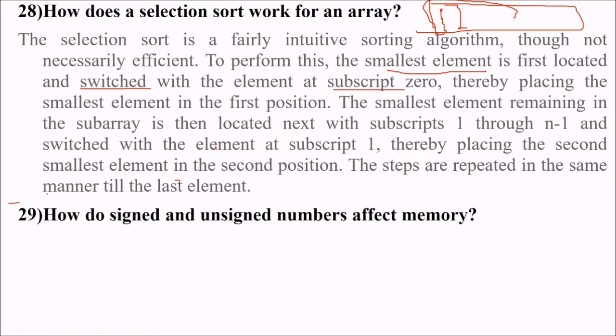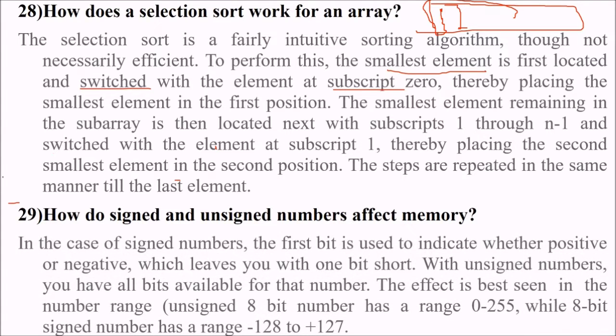29th is how do signed and unsigned numbers affect memory? If you have a signed number, it means you can have a minus sign in front. Consider it to be a number line - this is zero. You have values on the right side and values on the left side also. If it is signed, there is a possibility of negative numbers also. The first bit is used to indicate whether it is positive or negative, which leaves you with one bit short. With unsigned numbers, you have all bits available for that number. For example, if you have an unsigned 8-bit number, it has a range 0 to 255, while an 8-bit signed number will have a range from minus 128 to 127.